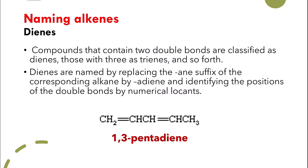So let's have a look at the compound we have right here. This compound has no substitutions — it's just a simple straight chain alkene. Let's give numbers to the different carbons: 1, 2, 3, 4, 5. As you can see, there is a double bond on carbon number 1 and another double bond on carbon number 3.